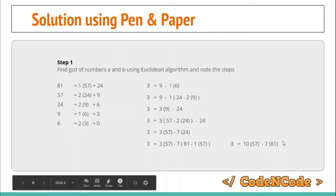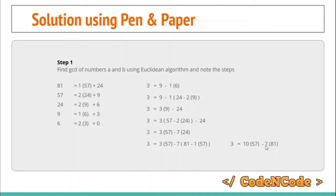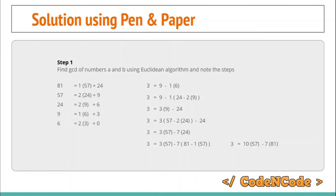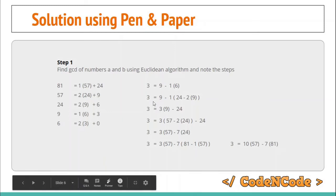Finally, the GCD will be the linear combination of a and b, giving you the solution — in this case x = 10 and y = -7. I suggest you take some examples like 24 and 56, try to apply the Extended Euclidean Algorithm using pen and paper, and find the solution of 24x + 56y = gcd(24, 56). Try one or two examples before the next lecture.